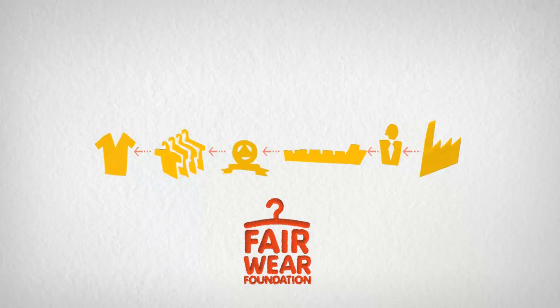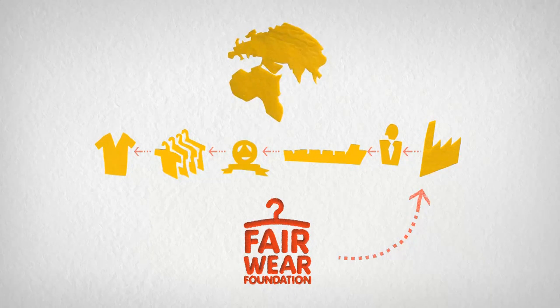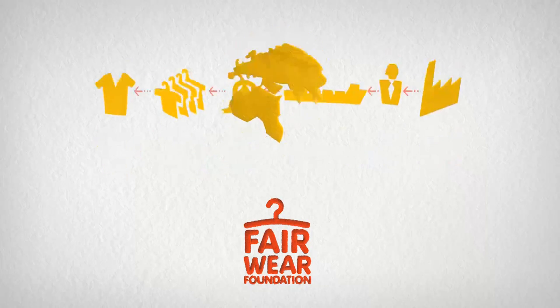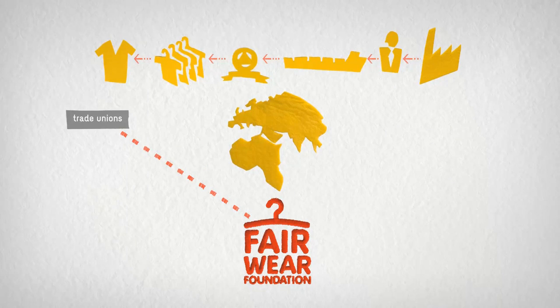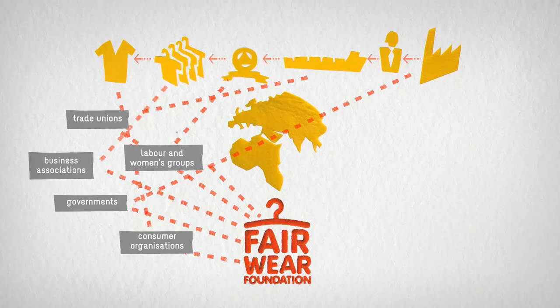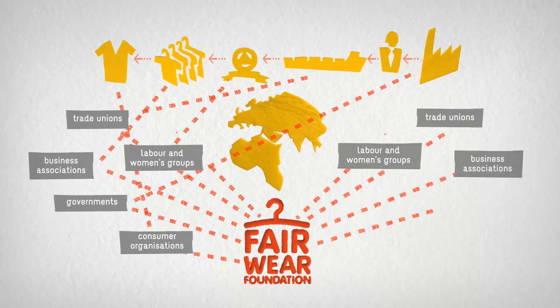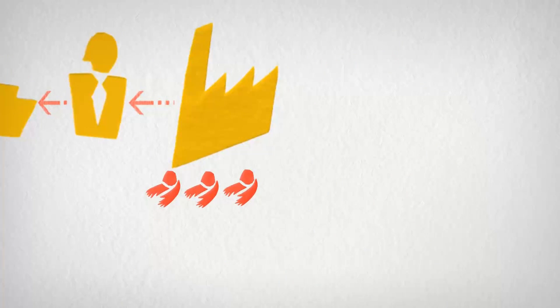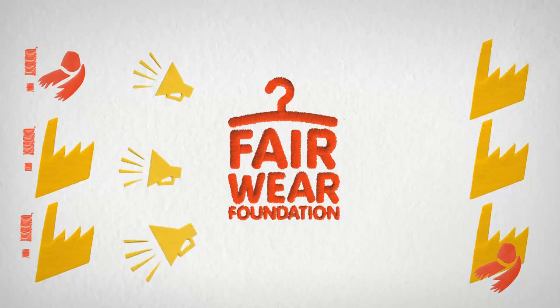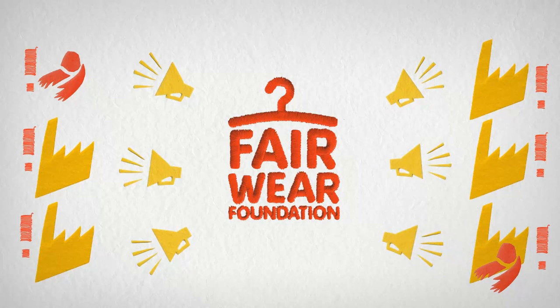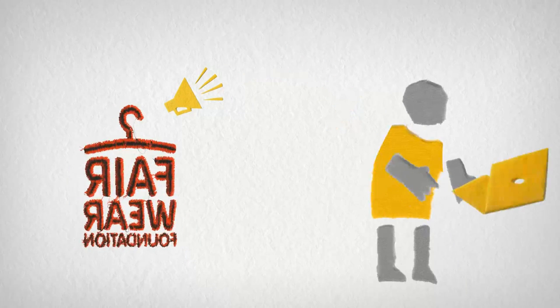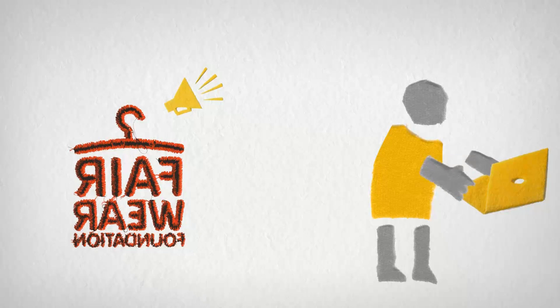So, Fair Wear Foundation works on a number of levels. We check conditions in factories and production countries, and we look at the way that brands in Europe do business with factories. Fair Wear Foundation also works with trade unions, labor and women's groups, business associations, governments, and consumer organizations, both in production countries and in Europe, to find solutions that last. Workers themselves can complain directly to Fair Wear Foundation. Fair Wear Foundation reports publicly about brand performance, progress in factories, as well as worker complaints. And that's where you come in. Public reporting allows consumers to see what's behind the label and make an informed decision about what clothes to buy.